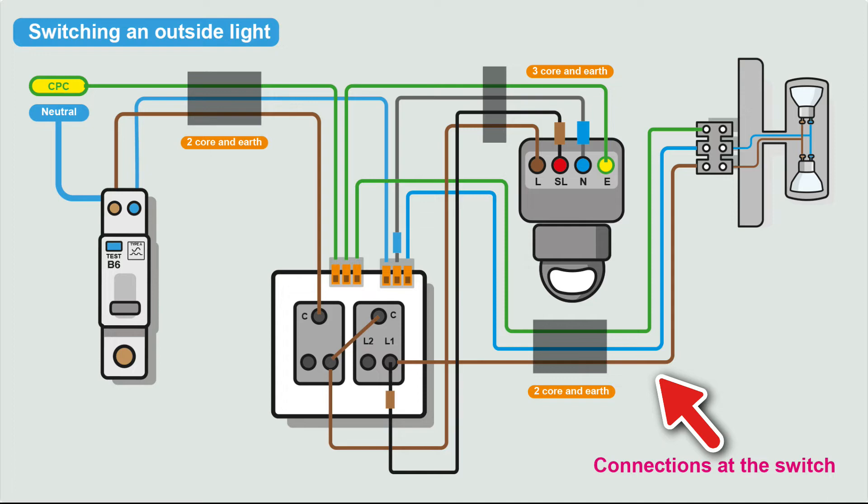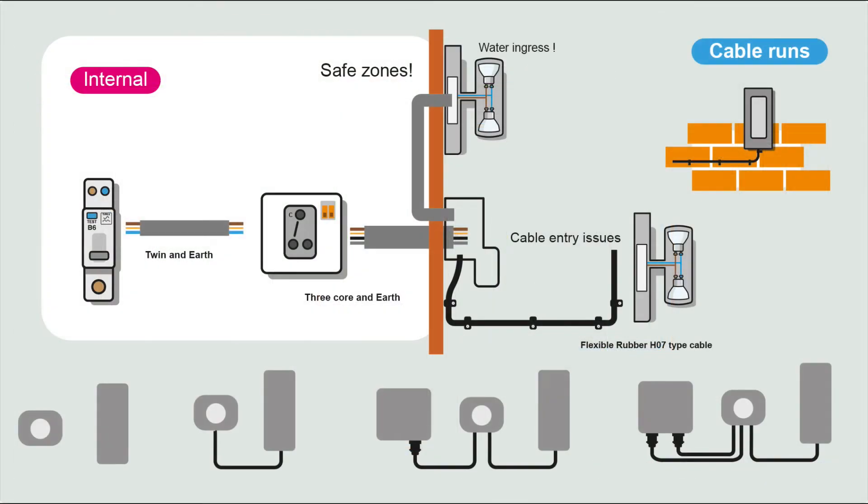But depending where the cables are in the building, there's certain cables you should use. Outdoors, for your permanent fixed wiring, you can use twin-and-earth or three-core and earth. If you're running cables outside, twin-and-earth is not suitable to be run outside. It's not UV stable. The sun would eventually make the PVC insulation get brittle and weak. Outdoors, if you're running cable surface-mounted cable, you want to use flexible cable, like a rubber flex.